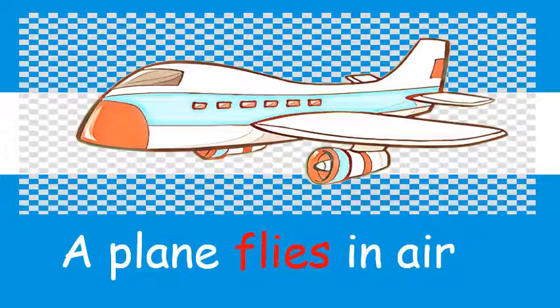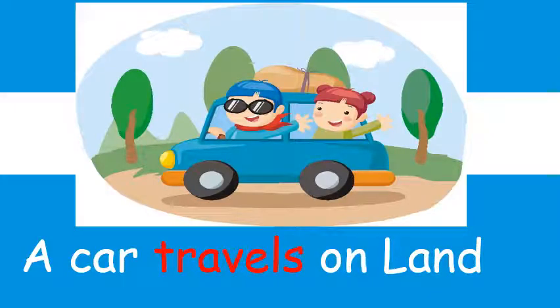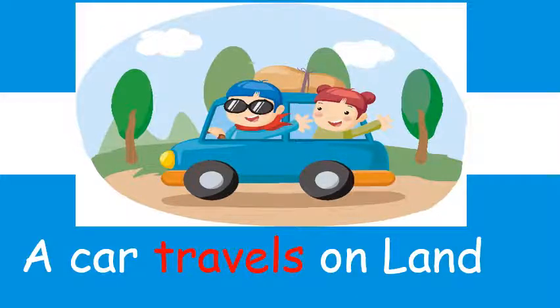So let's repeat again. Please repeat after me. A plane flies in the air. The ship travels on water. A ship, a boat, a felucca — they all travel on water. It's a car. A car travels on land. What else travels on land? Excellent. A train travels on land. A bike travels on land. A motorcycle travels on land.